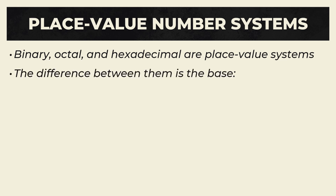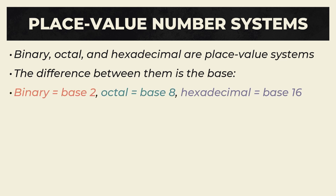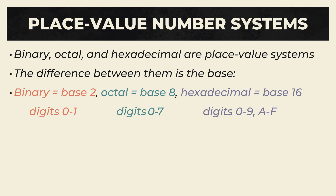The difference, though, is in the base. Instead of being base 10, like the decimal system, binary is base 2, octal is base 8, and hexadecimal is base 16. Accordingly, binary only uses the digits 0 to 1, octal uses the digits 0 to 7, and hexadecimal uses the digits 0 to 9, as well as the letters A to F to represent 10, 11, 12, 13, 14, and 15.